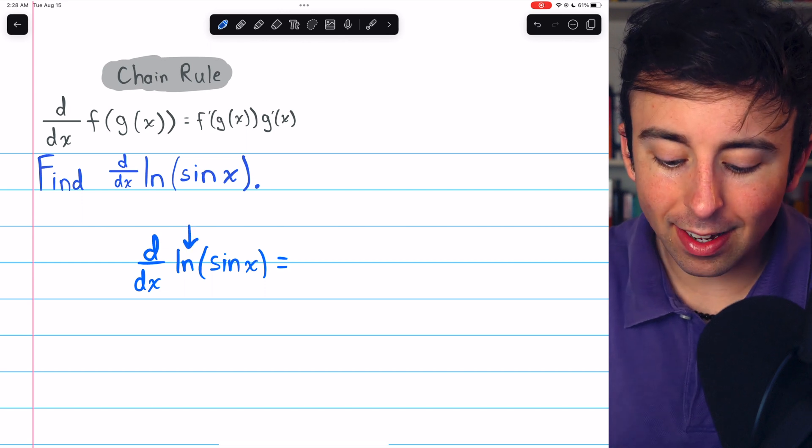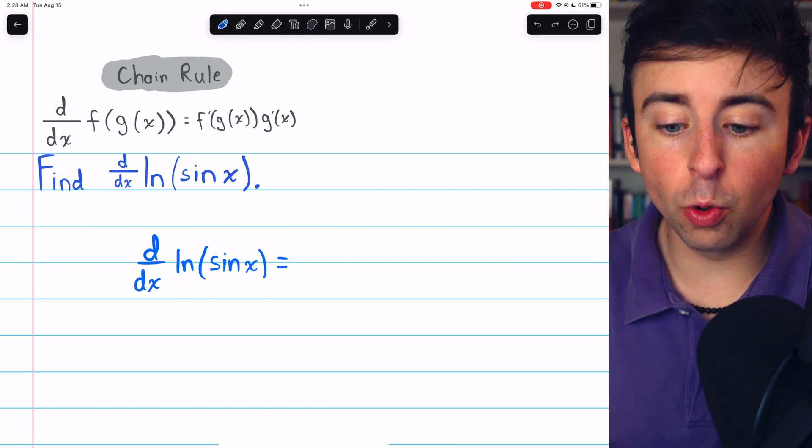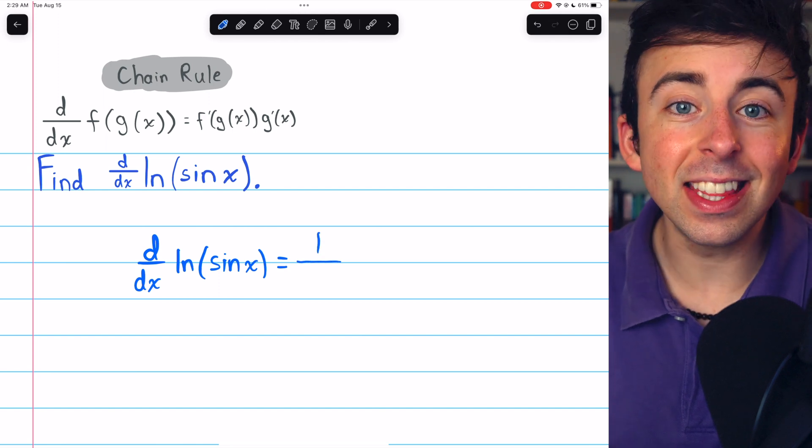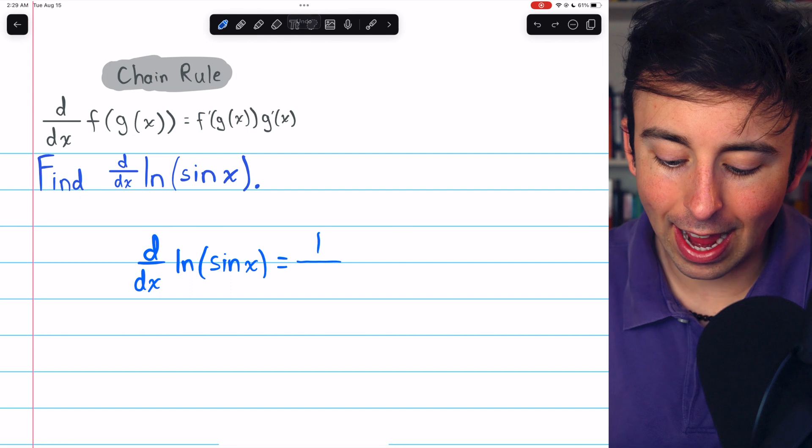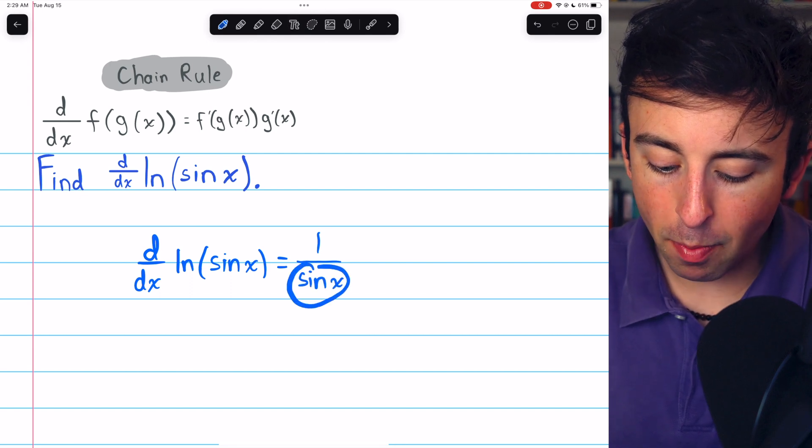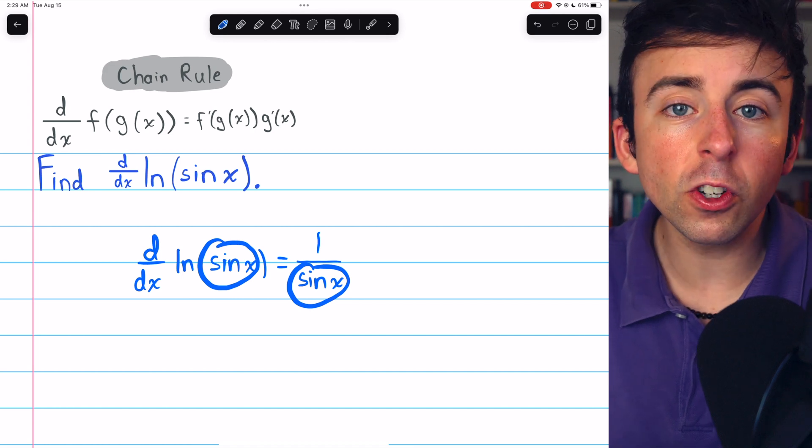Again, the outside is natural log. The derivative of natural log is 1 over the input, which in this case is sine x. So 1 over sine x. Again, remember that we leave that inside function unchanged.